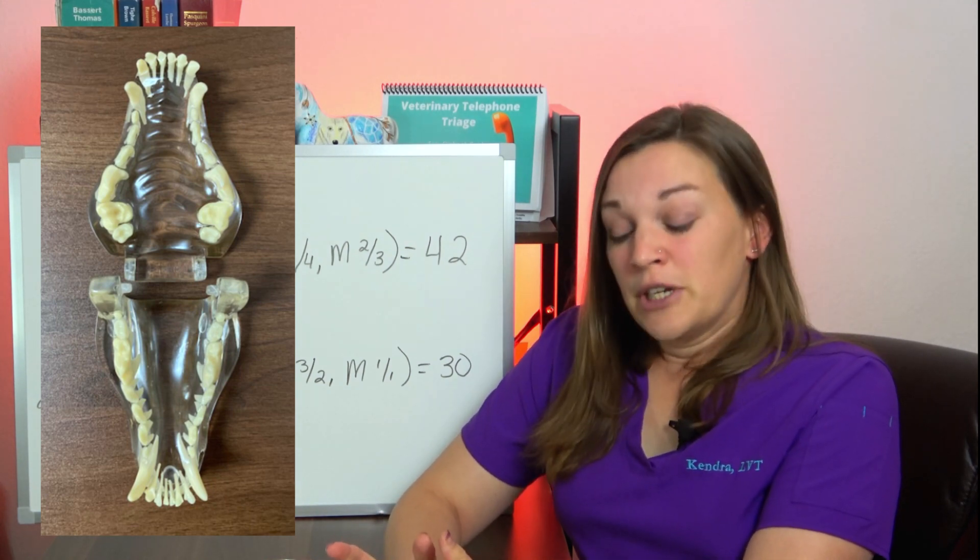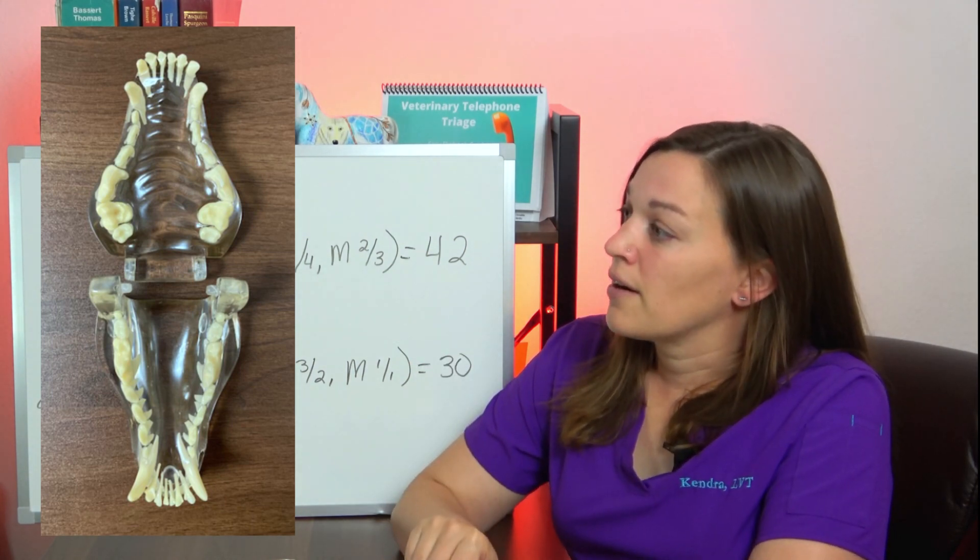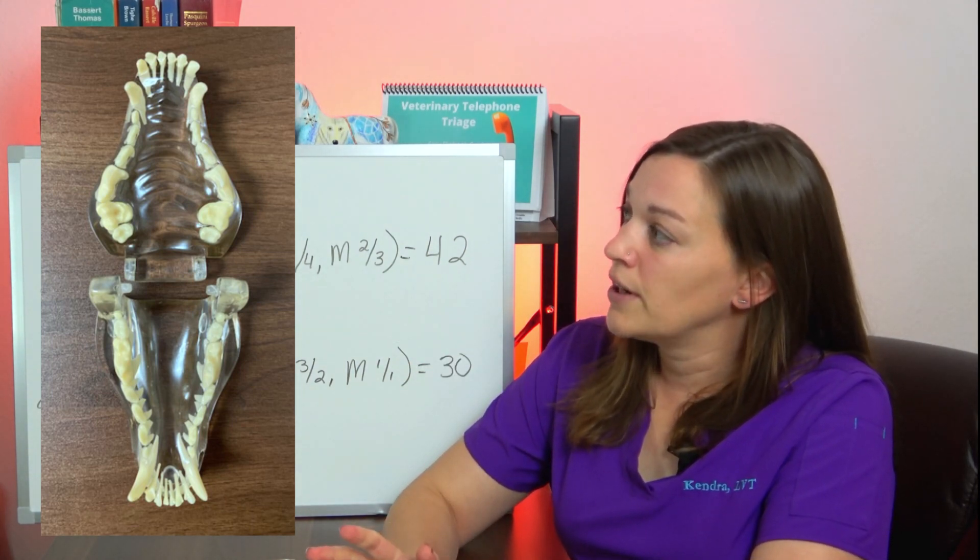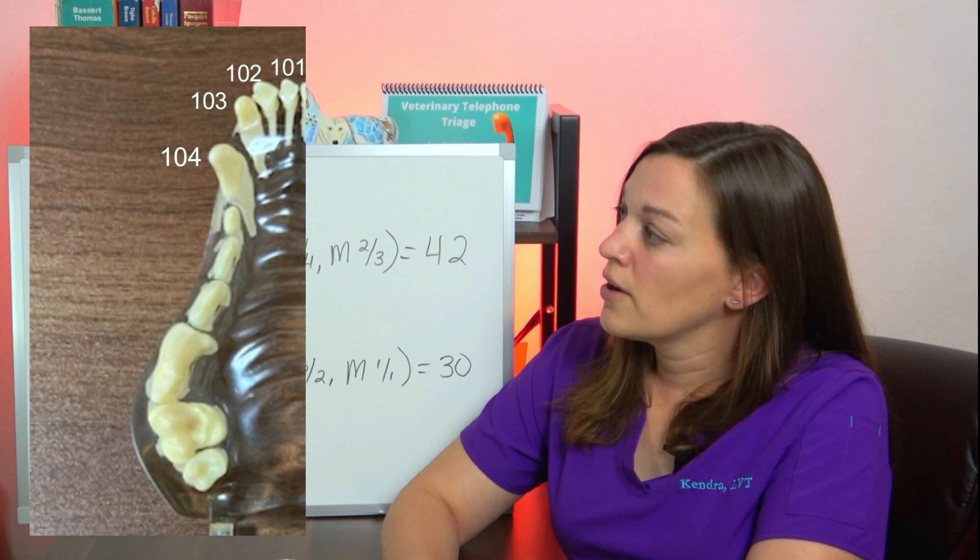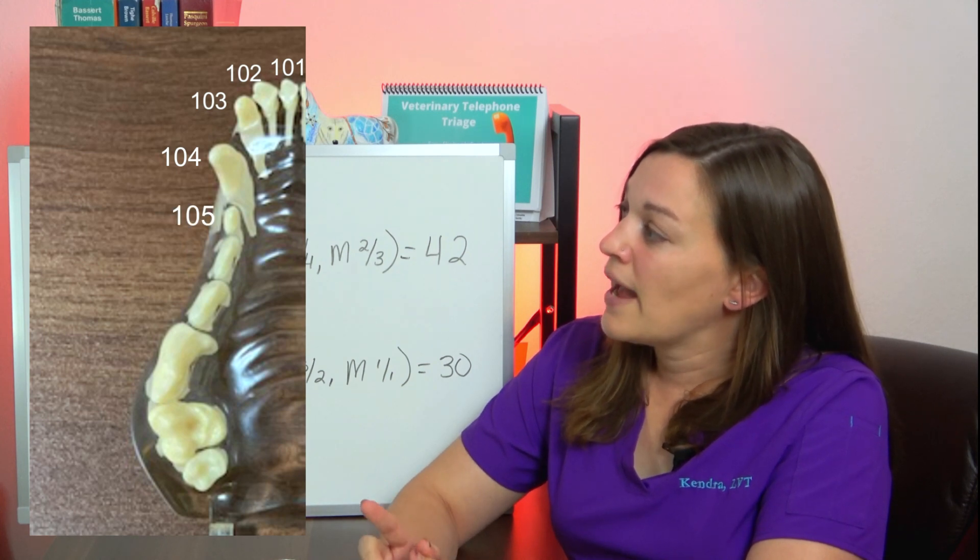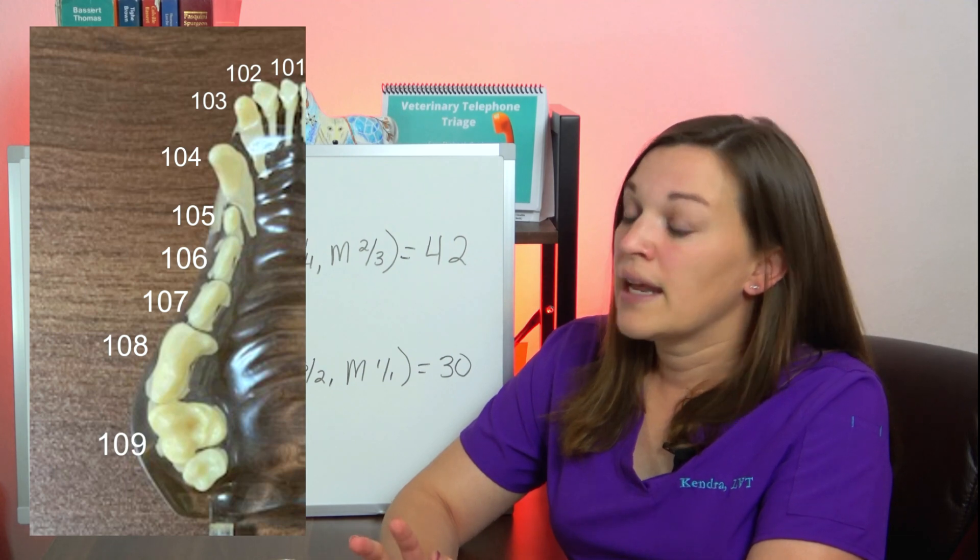Using the information we just learned, let's count out all the teeth on our canine jaw here. So we'll start in the upper right, our 100s: 101, 102, 103 for all of our incisors, 104 on our canine, 105, 106, 107, and 108, 109, and 110.